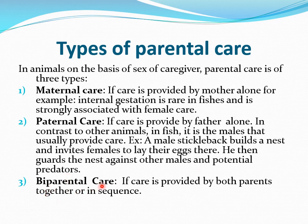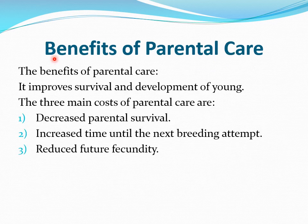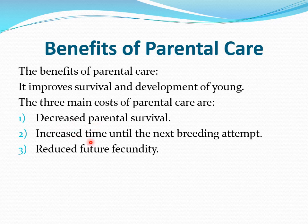Third is bi-parental care — if care is provided by both parents together or in sequence. The benefits of parental care are that it improves survival and development of young. The three main costs of parental care are: decreased parental survival, increased time until the next breeding attempt, and reduced future fecundity.